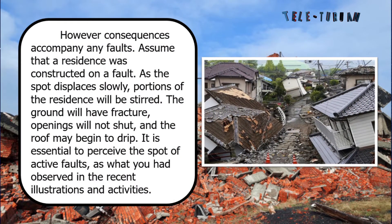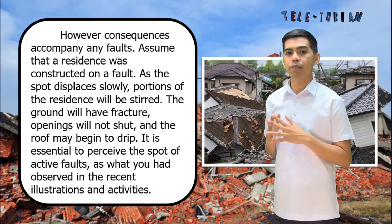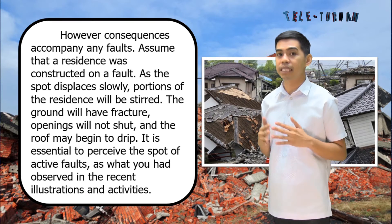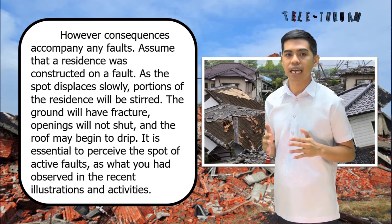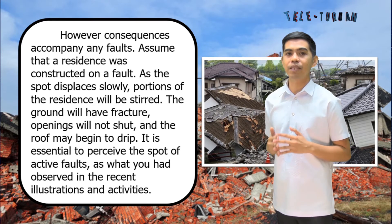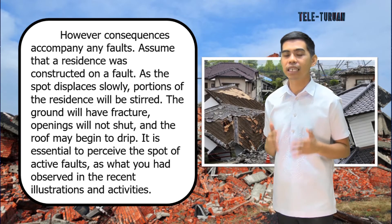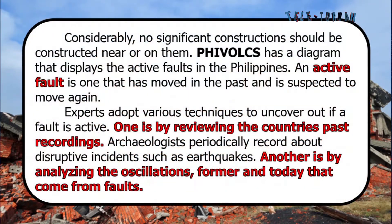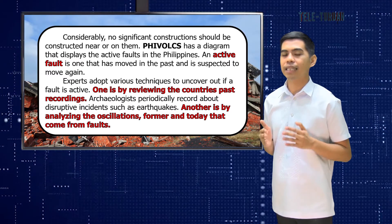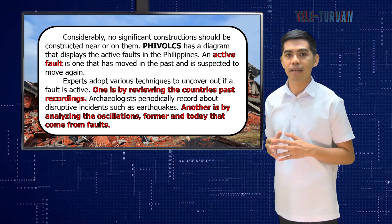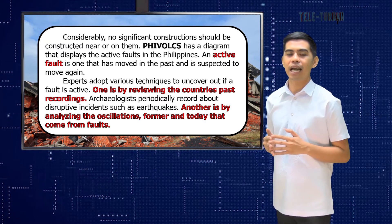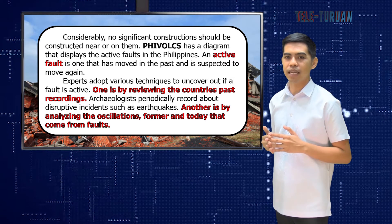Consequences accompany any faults. Assume that a residence was constructed on a fault. As the spot displaces slowly, portions of the residence will be stressed. The ground will have fractures, openings will not shut, and the roof may begin to drip. It is essential to be aware of active faults, as observed in the recent illustrations and activities. No significant constructions should be built near or on them. PHIVOLCS has a diagram that displays the active faults in the Philippines. An active fault is one that has moved in the past and is suspected to move again.